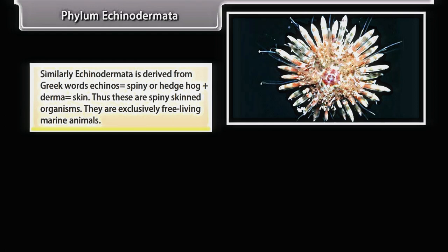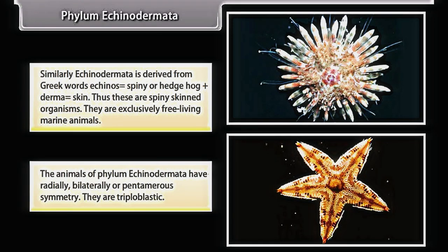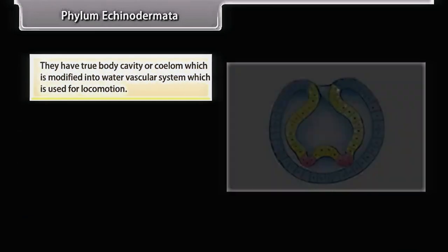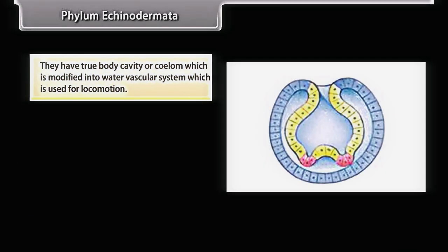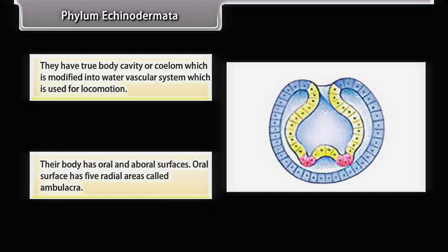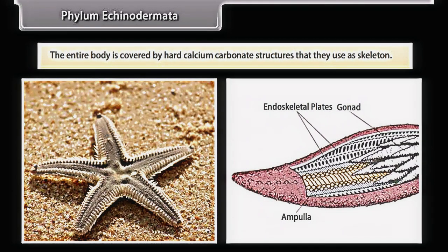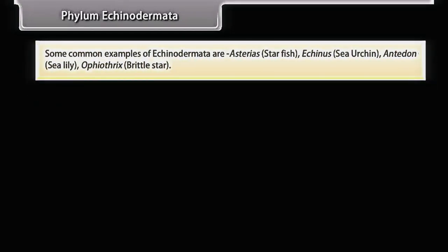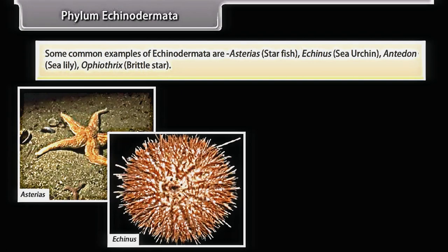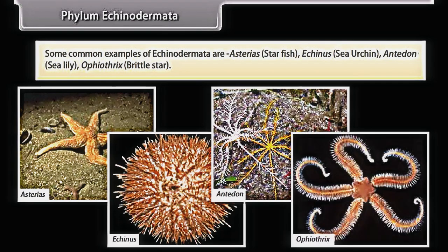Echinodermata is derived from Greek words 'echinos' (spiny/hedgehog) and 'derma' (skin) — these are spiny-skinned organisms. They are exclusively free-living marine animals. They have radial, bilateral, or pentamerous symmetry and are triploblastic. They have a true body cavity (coelom) modified into a water vascular system used for locomotion. The body has oral and aboral surfaces; the oral surface has five radial areas called ambulacra. The entire body is covered by hard calcium carbonate structures used as skeleton. Common examples are Asterias (starfish), Echinus (sea urchin), Antedon (sea lily), and Ophiothrix (brittle star).